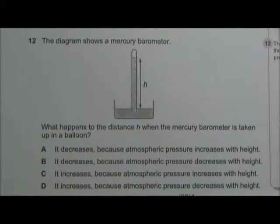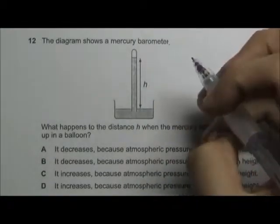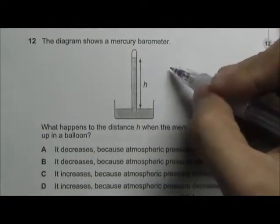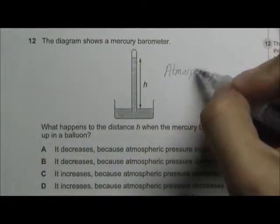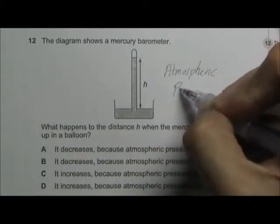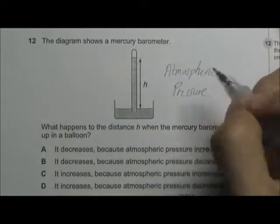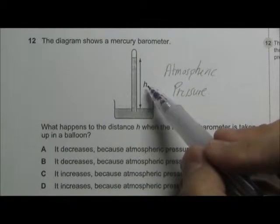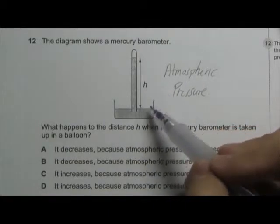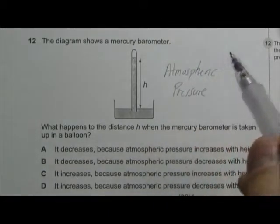In this question we have a diagram that shows the mercury barometer. We need to understand that the barometer is used to measure the atmospheric pressure. And the larger the atmospheric pressure, the larger the height of the mercury column recorded by the barometer.